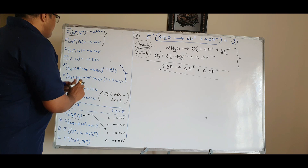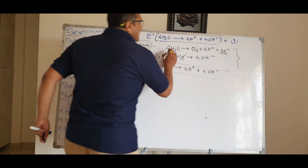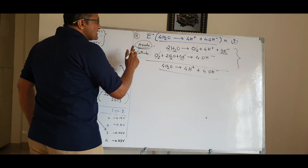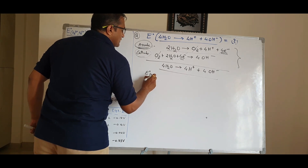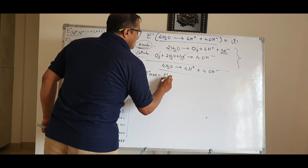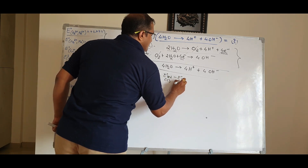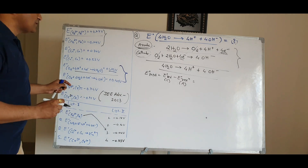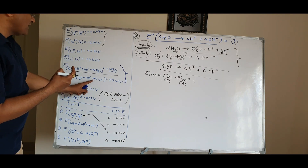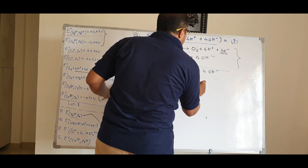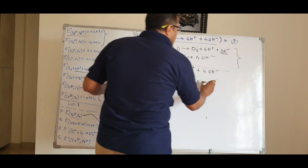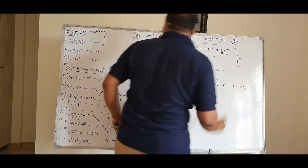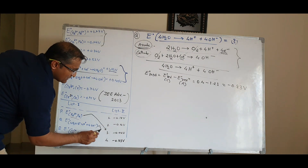The desired reaction is formed by summing the reversed first reaction (oxidation, anode) and the second reaction as is (reduction, cathode). E⁰total = E⁰red(cathode) − E⁰red(anode). The cathode is O₂ + 2H₂O + 4e⁻ → 4OH⁻ with E⁰ = 0.4V, and the anode value is 1.23V. So E⁰total = 0.4 − 1.23 = −0.83V. Answer: option 4.